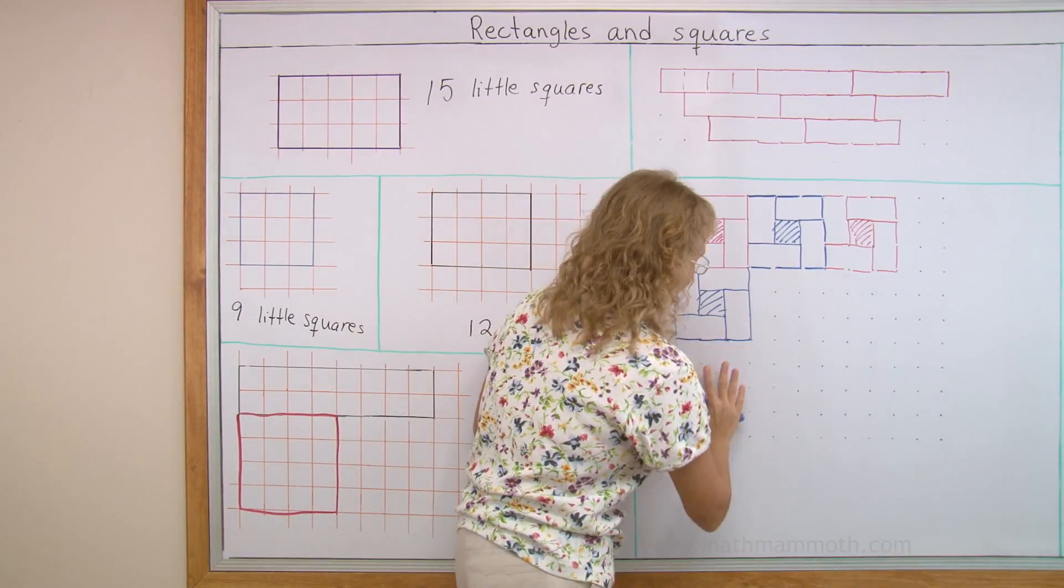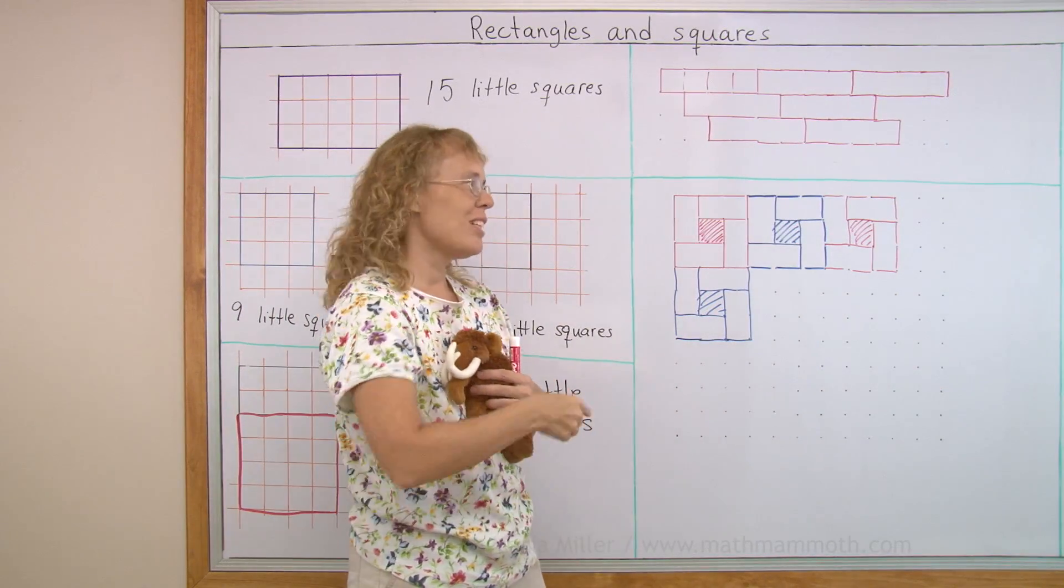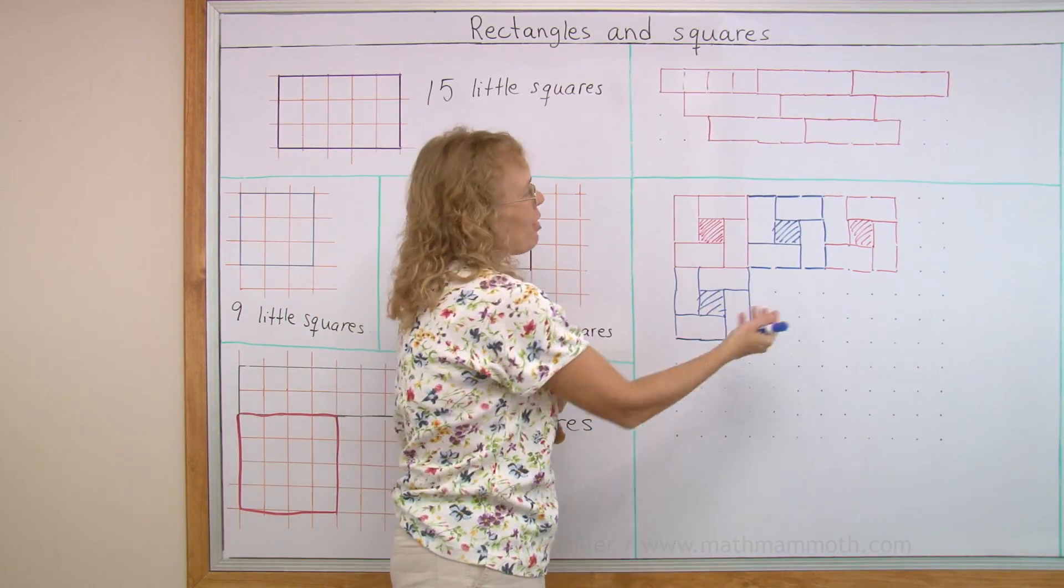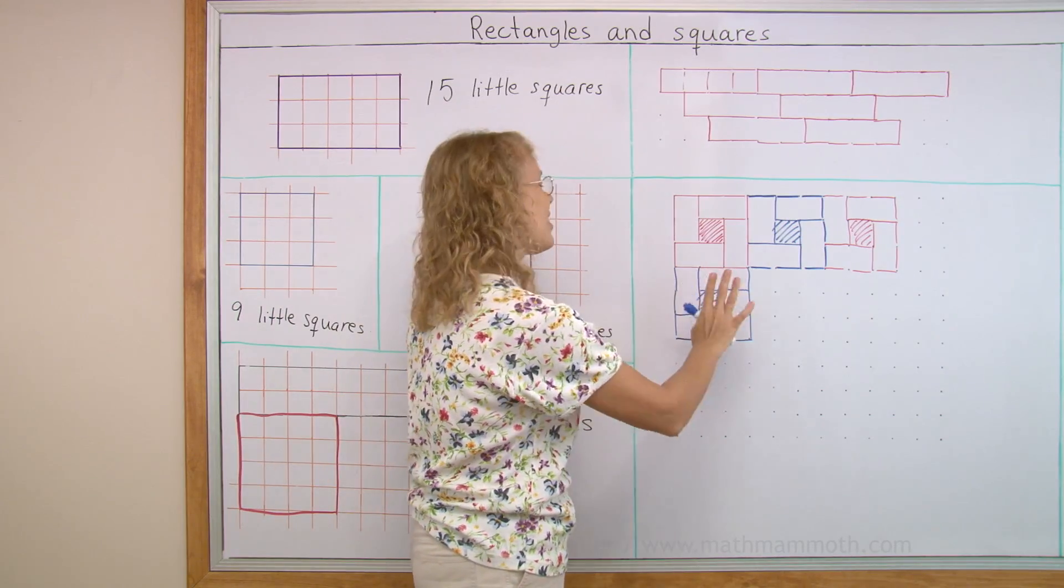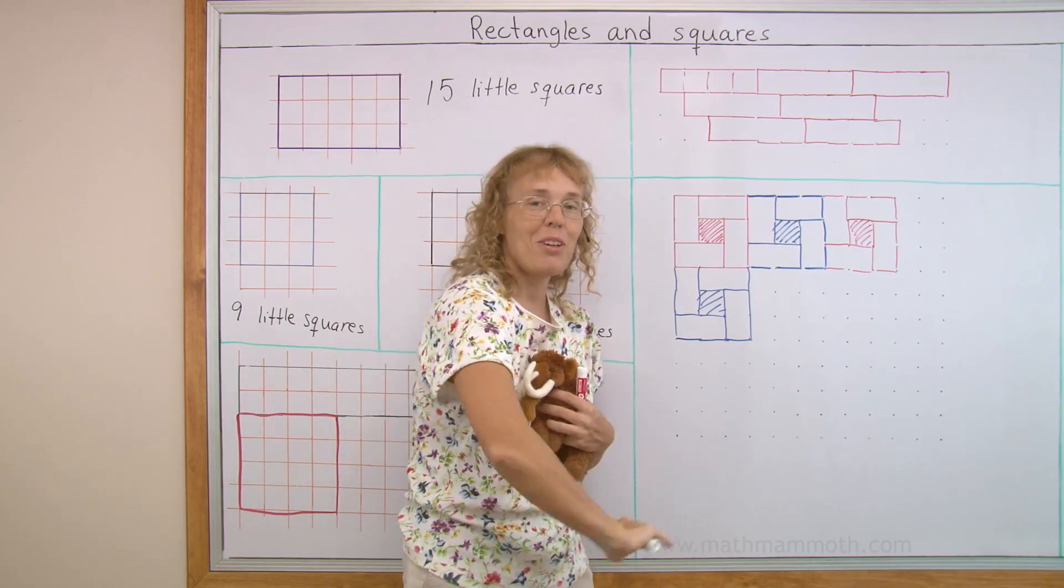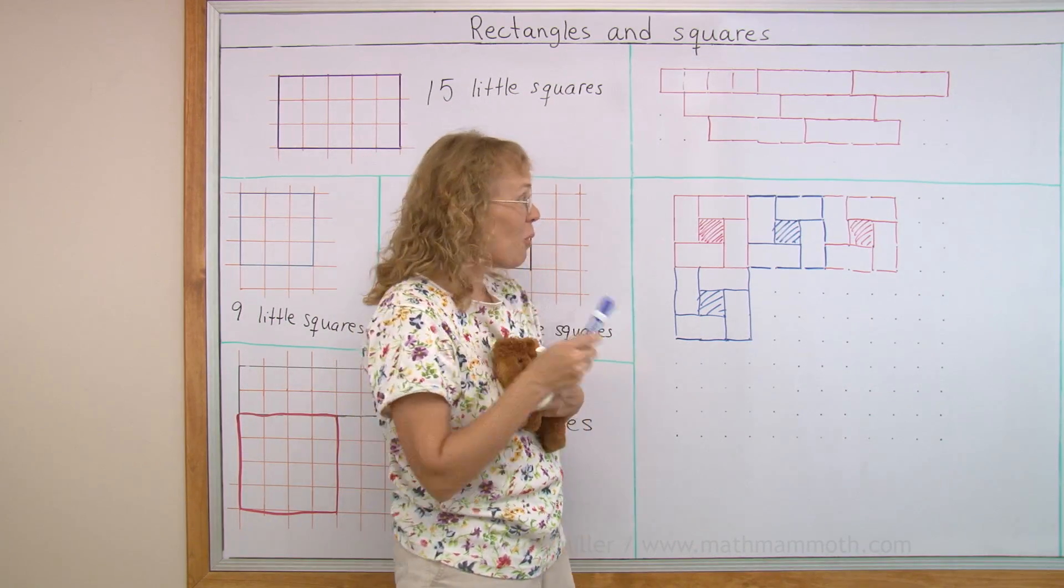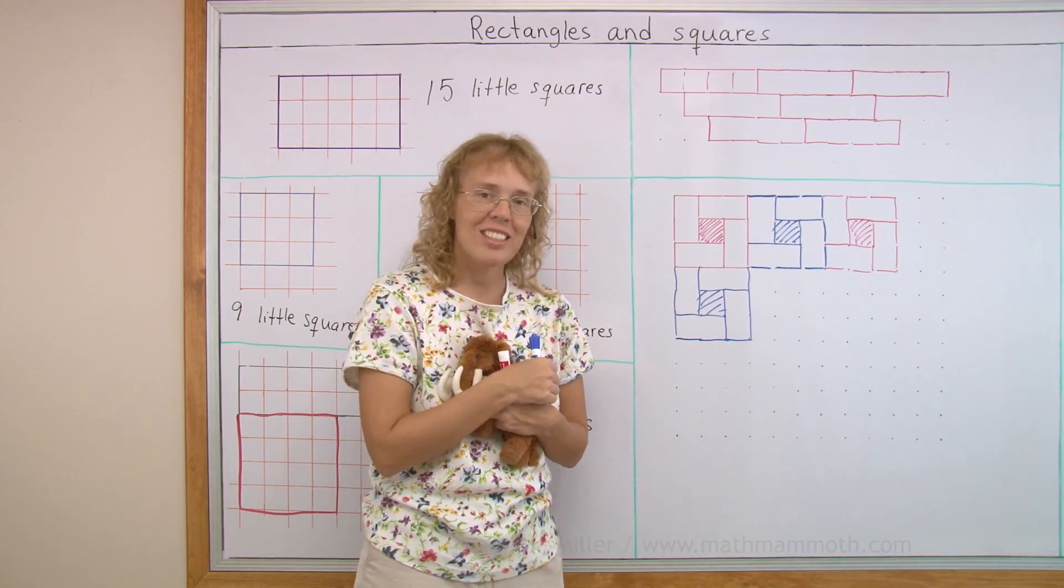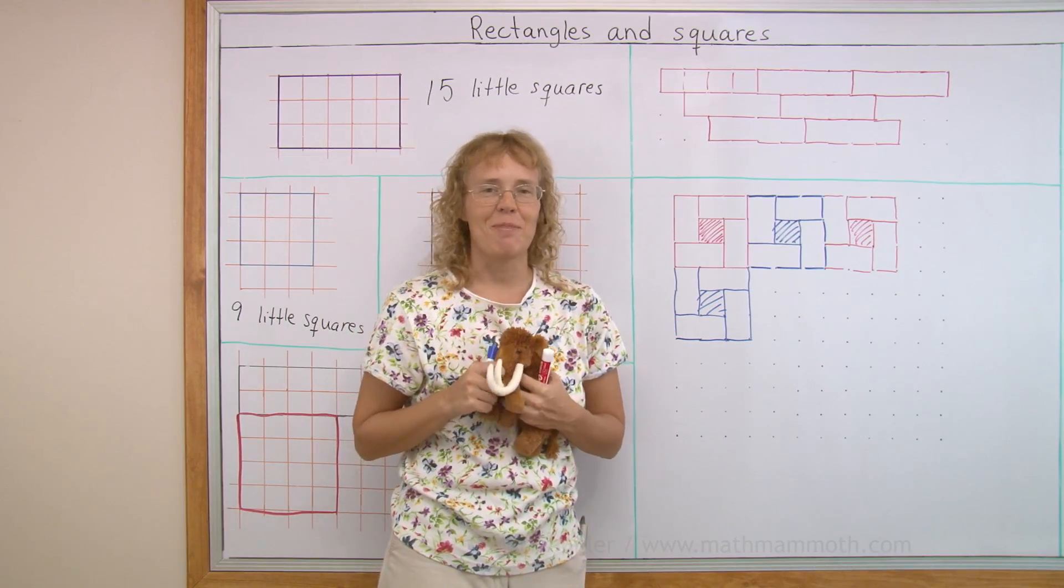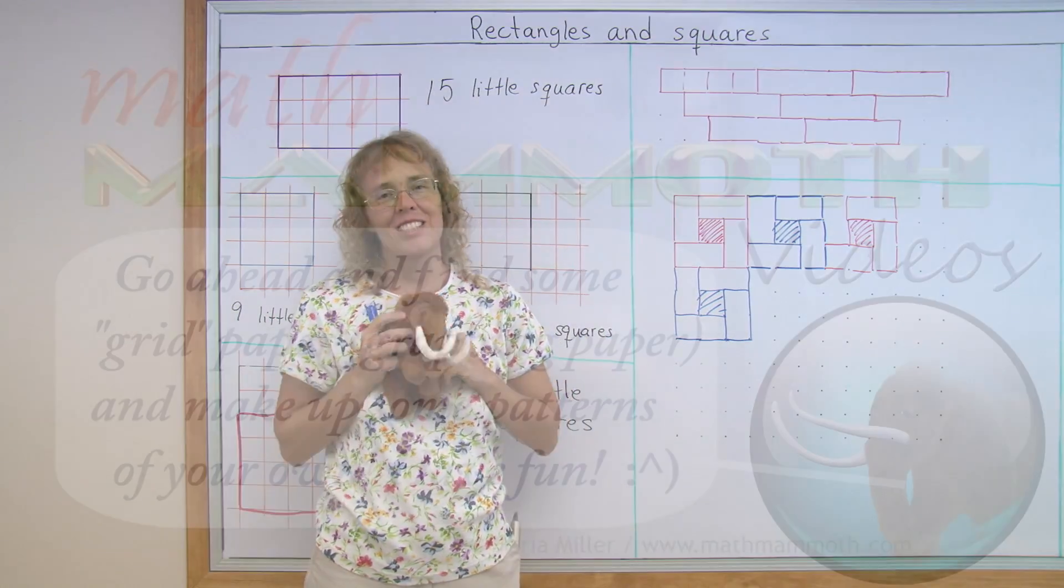And then we could repeat here, here, and go down. Okay. Repeating the same pattern. It's like tiling a floor. You could think of these as tiles in a pattern that you can put on the floor. And in your book you can design your own patterns like that using rectangles and squares. So it's a lot of fun. We're all done with this lesson.